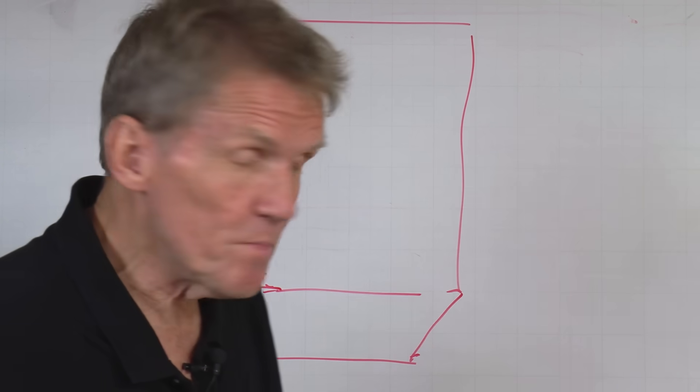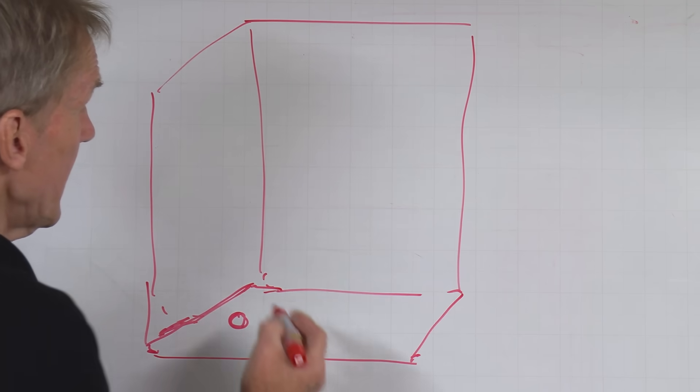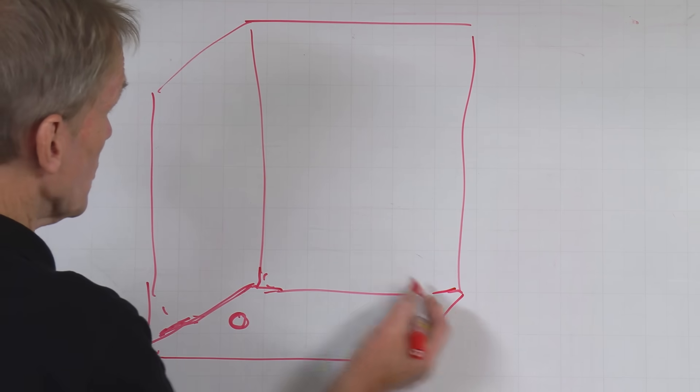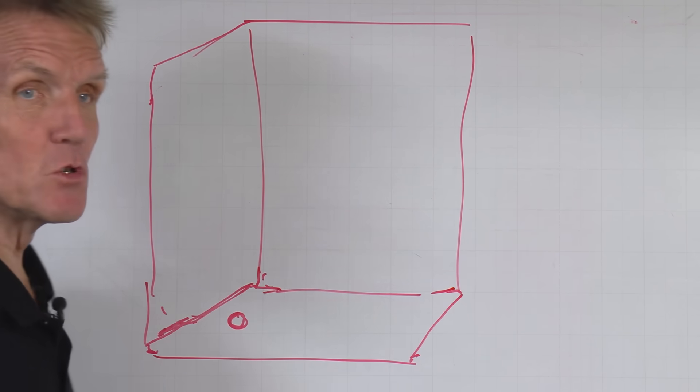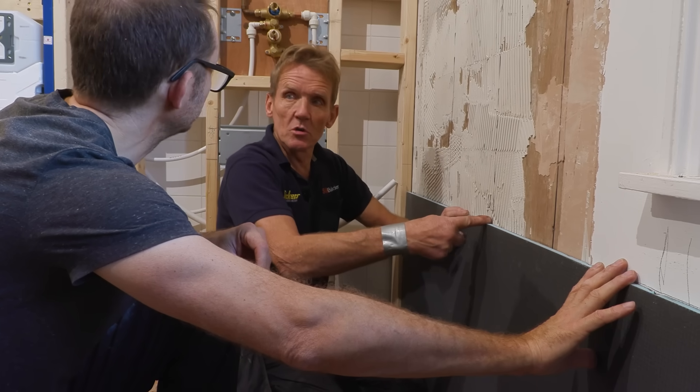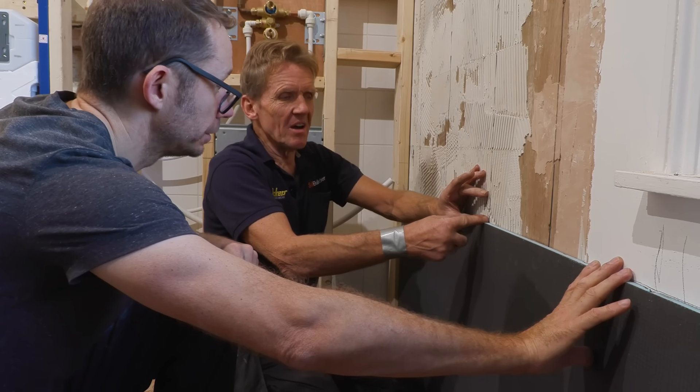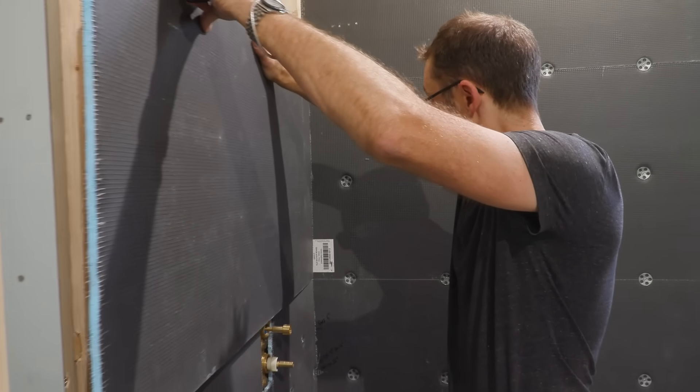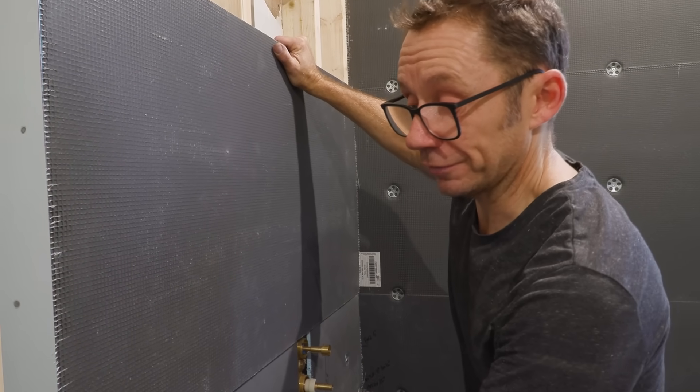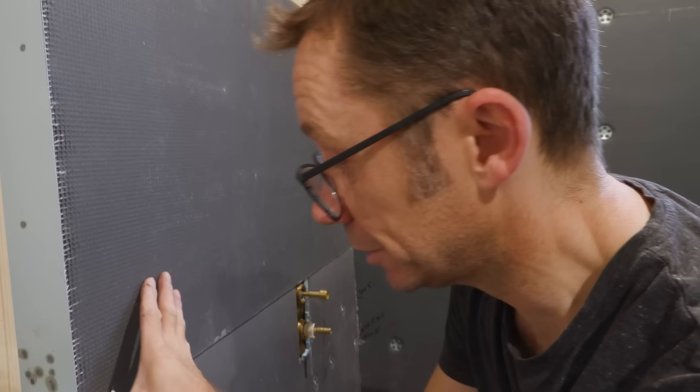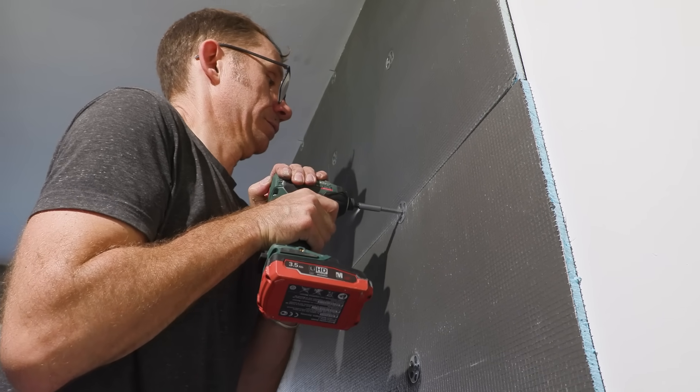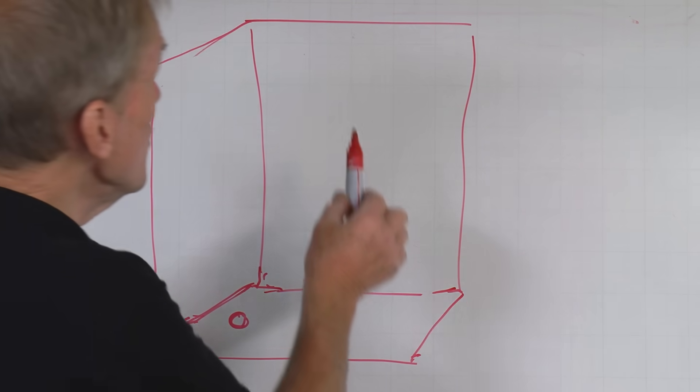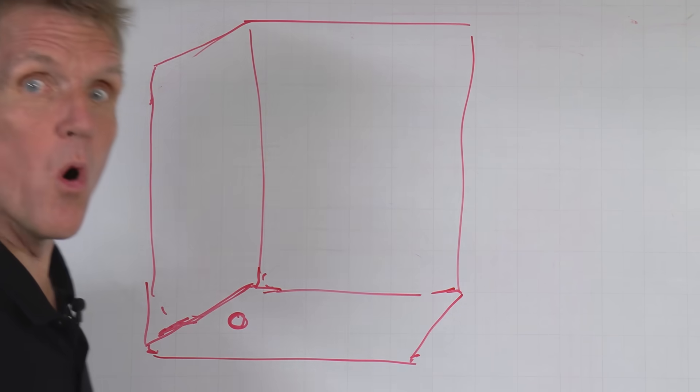First thing we do before we stick that tray in is we prepare the walls. These two walls, the way we prepare those walls is we either use tile backer board, of which there are many. I use Elements board because it's British made and one of the cheaper ones, but you can use Wedi, you can use all kinds of other things, aqua panel, Hardie backer cement board. But whatever you do, use a board which is waterproof.